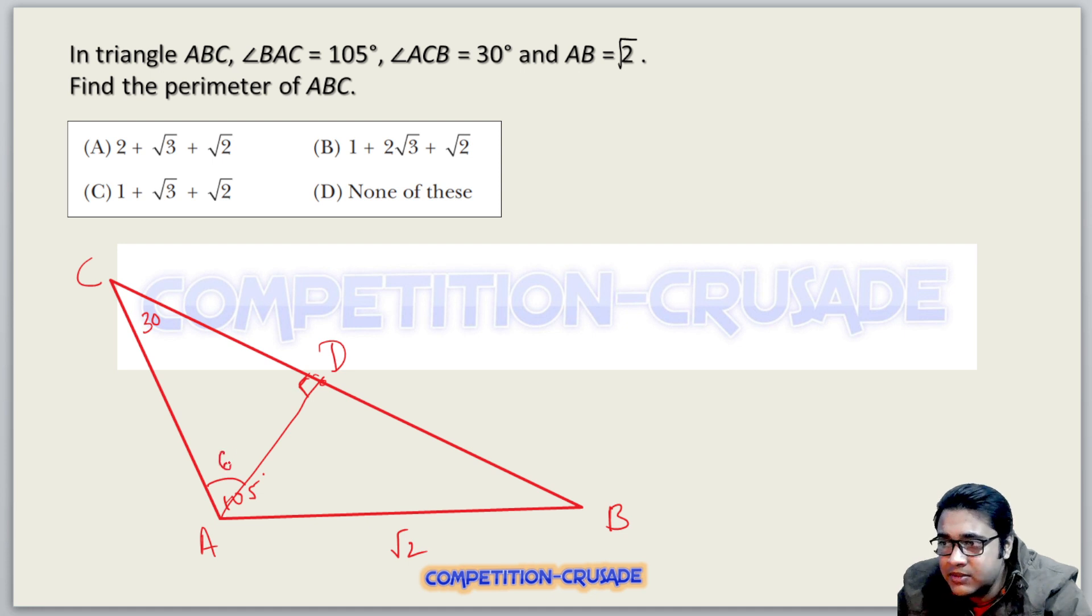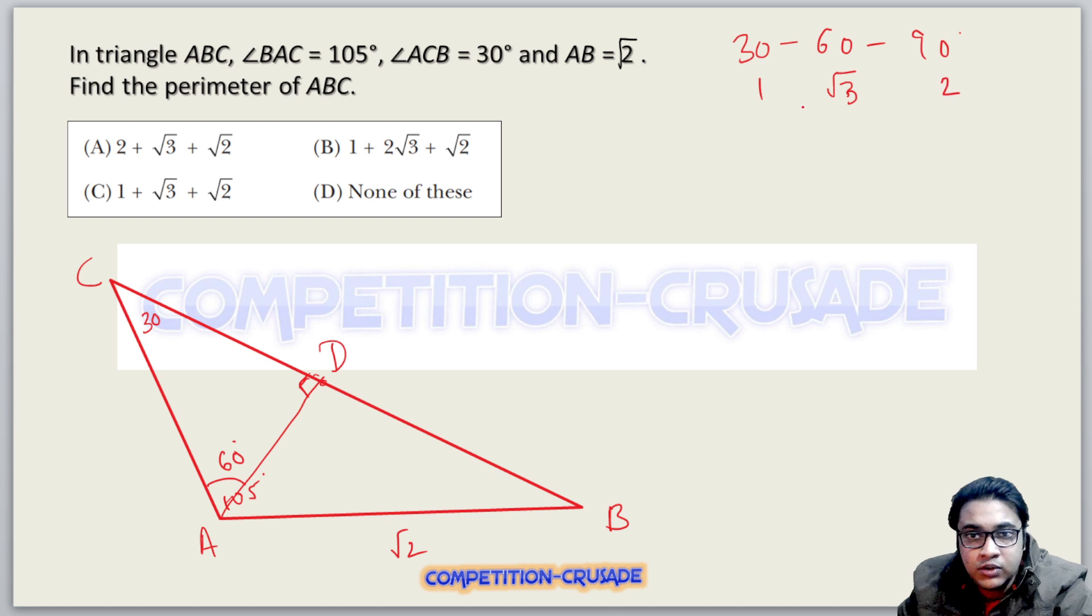It very interestingly becomes a 30-60-90 triangle. There is a property of 30-60-90 triangles: the sides are 1, root 3, and 2. And interestingly, this angle will become 45 degrees, and this will also become 45 degrees, because angle ADB is 90.